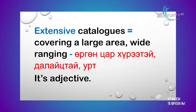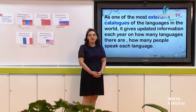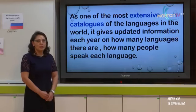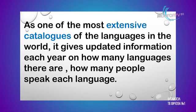There are five bold new words in the text. I will explain them now. Number one is 'extensive' — as in 'extensive catalogs'. The synonym is 'covering a large area' or 'wide-ranging'. It's an adjective. The sentence in the text is: 'As one of the most extensive catalogs of languages in the world, it gives updated information each year on how many languages there are and how many people speak each language.' Listen and repeat: extensive catalogs.